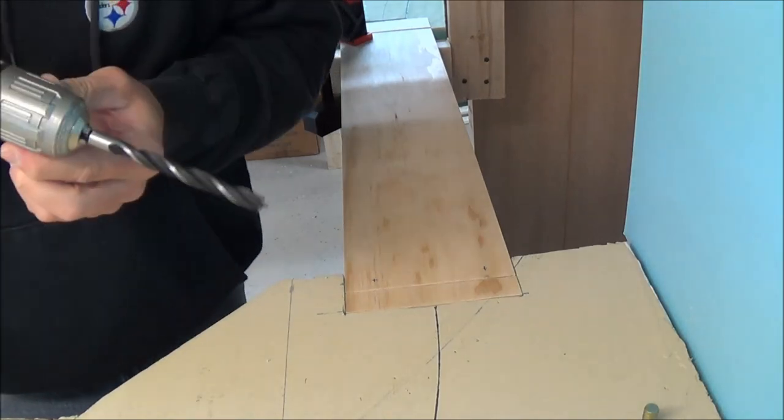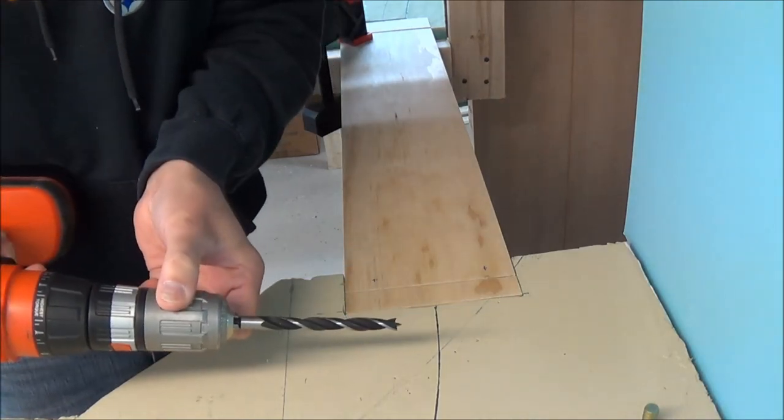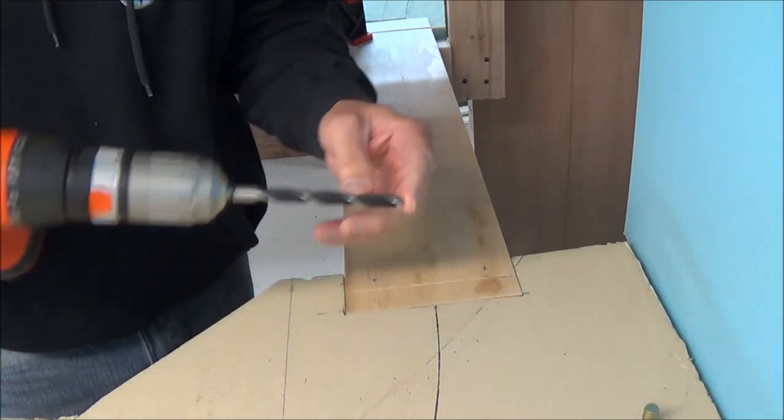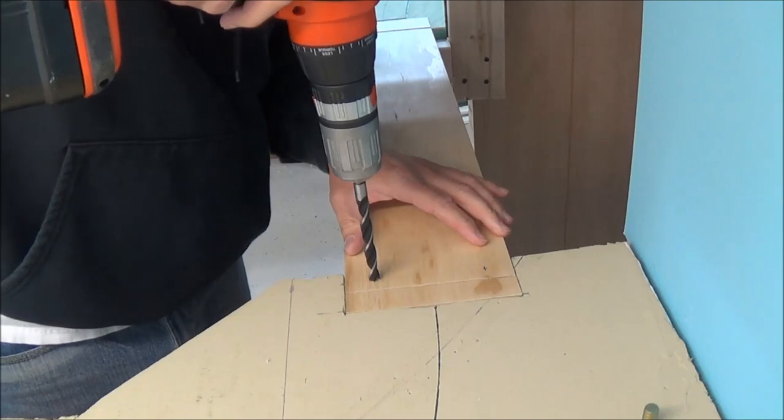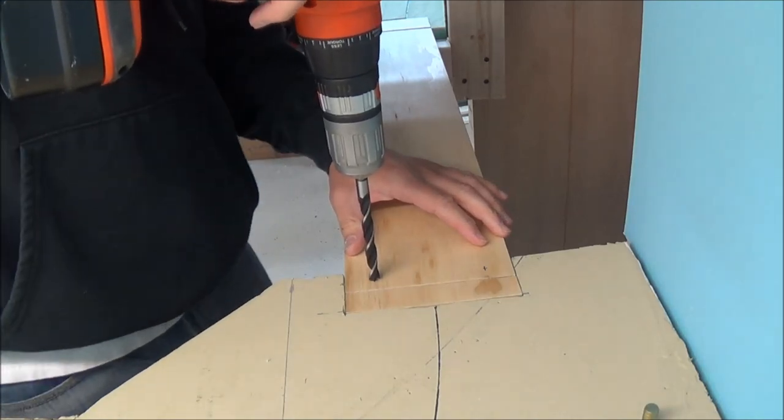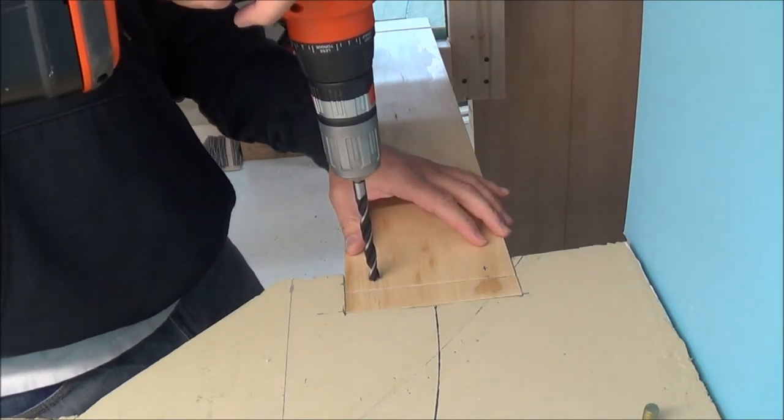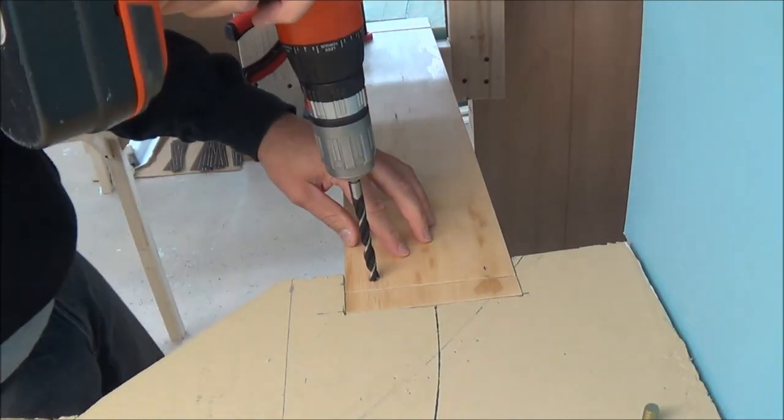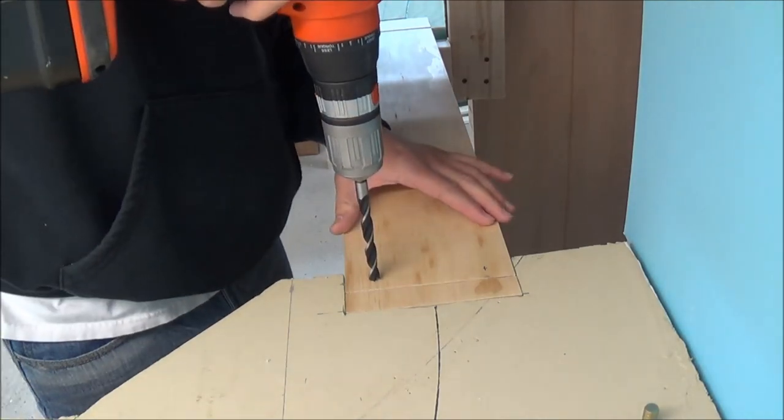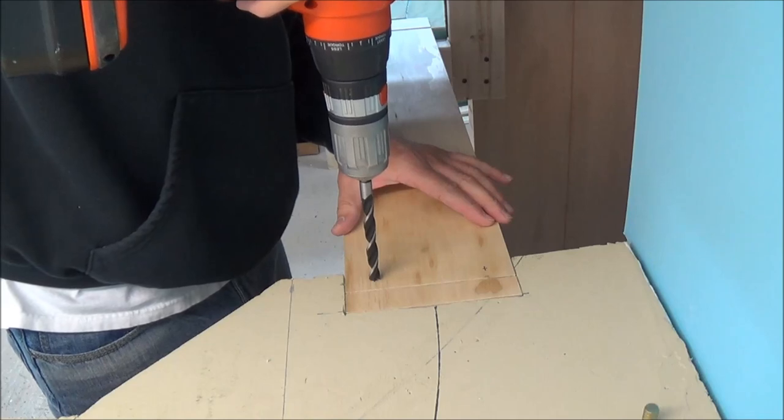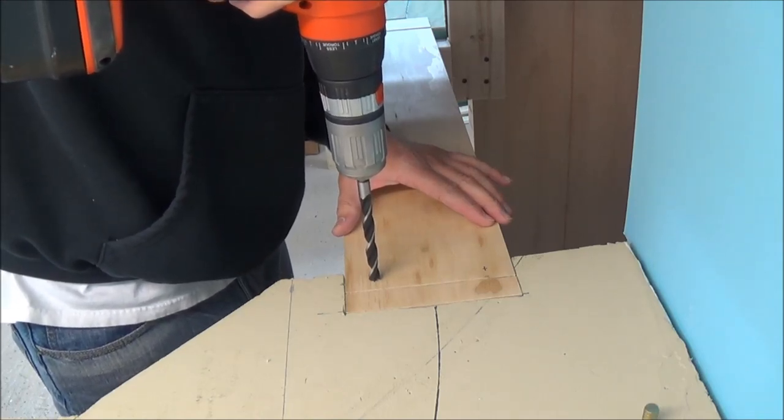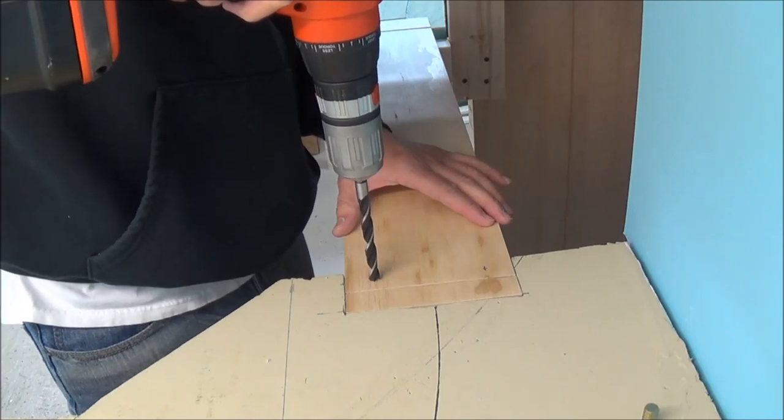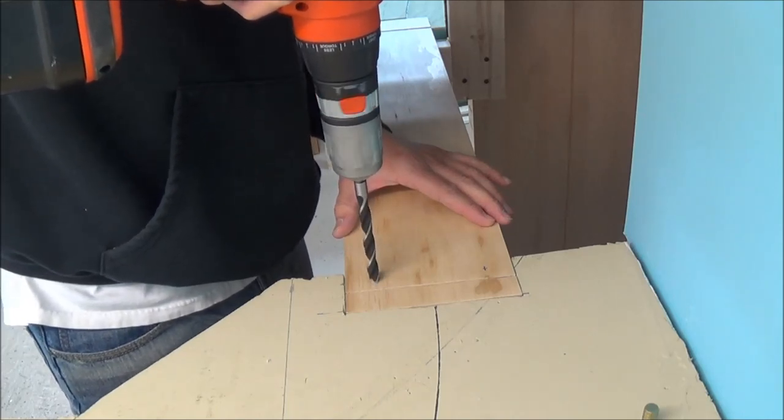And I'm using one of these brad point drill bits, you can see that brad point, with the point on the end of it. That way I can get it started without the drill bit walking on me. And you want to try the best you can to keep your drill bit perfectly vertical and level so you make a nice straight hole all the way down through. So we're going to do that right now.